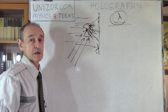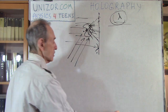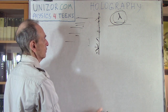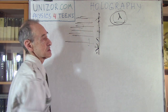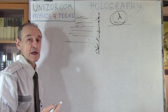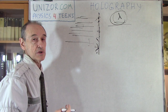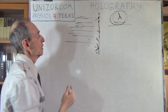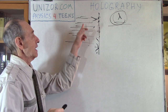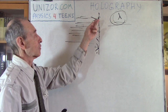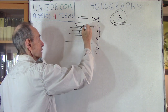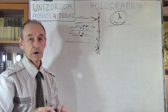Then we do exactly the same as with a point light. Whenever the object is no longer there, we use the same reference beam. It will reflect from the little mirrors created during the recording stage. And again, exactly as explained in the previous lecture, every point light will be recreated in space exactly where it was, forming an object which is no longer physically there.